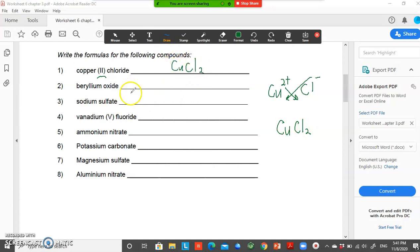Let's try the second question, beryllium oxide. Beryllium comes from group 2. You can check in the periodic table. Beryllium is Be with a 2+ charge since it comes from group 2. Oxide has a charge of 2-.